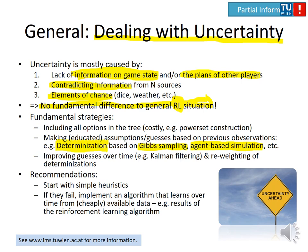You can also improve guesses by changing the sampling, introducing filtering techniques like the Kalman filter to sort out outliers, and re-weighting past determinizations to improve them step by step. My recommendation for the risk scenario: start with simple heuristics — if you have two armies, probably the stronger one will win — and only if those fail, try to implement an algorithm that does proper sampling or learning from available data.